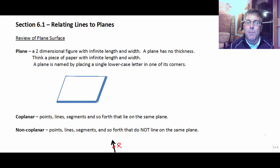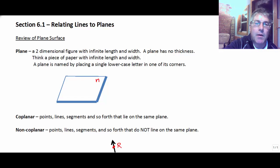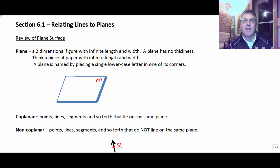To review planes, a plane is a two-dimensional figure with infinite length and width. A plane has no thickness. Imagine a piece of paper with infinite length and width. A plane is named by placing a single lowercase letter in one of its corners. On the screen here, you can see an example of a plane, and we might call this plane M.